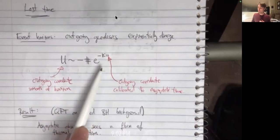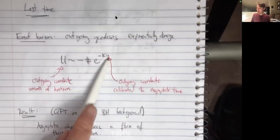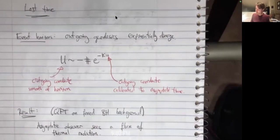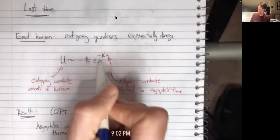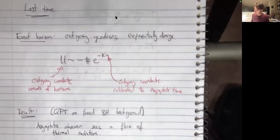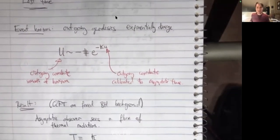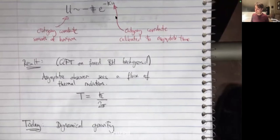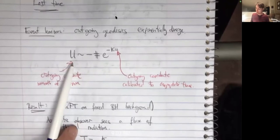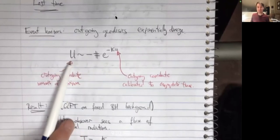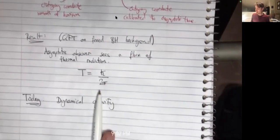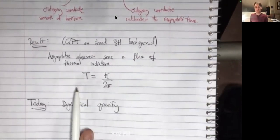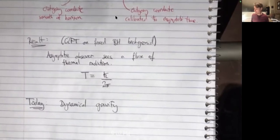The small u coordinate is measured at some clock at infinity — a distant observer. U labels the time at which a distant observer sees an outgoing geodesic, and there's an exponential relation involving the surface gravity between the two. The result from studying quantum field theory on a fixed background is that any state non-singular at the horizon will inevitably cause the asymptotic observer to see a flux of radiation with temperature set by the surface gravity.